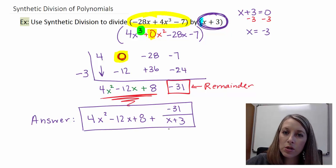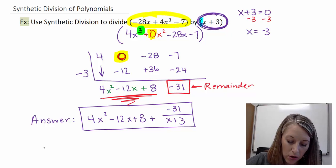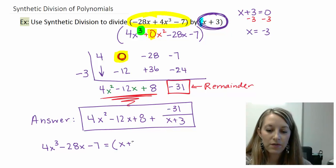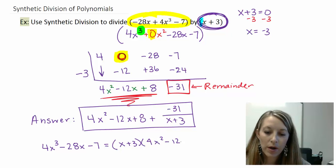If we wanted to do this by using the division algorithm, that means my original polynomial, 4x cubed minus 28x minus 7, equals my quotient times my divisor, which is x plus 3, plus our remainder, or in this case since it's negative, minus 31. So I have set up the division algorithm here for you.